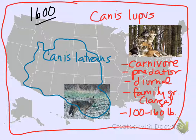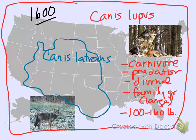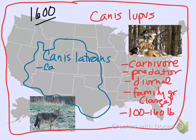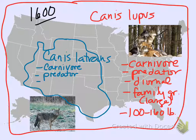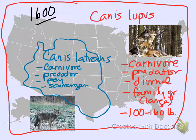Now let's talk about our little friend, Canis latrans. What do you know about Canis latrans' niche? First off — carnivore. They're a carnivore, a predator. Are they anything else? They can be prey. They are also really fantastic scavengers. And we're talking about the western coyote here — that's going to become important soon.